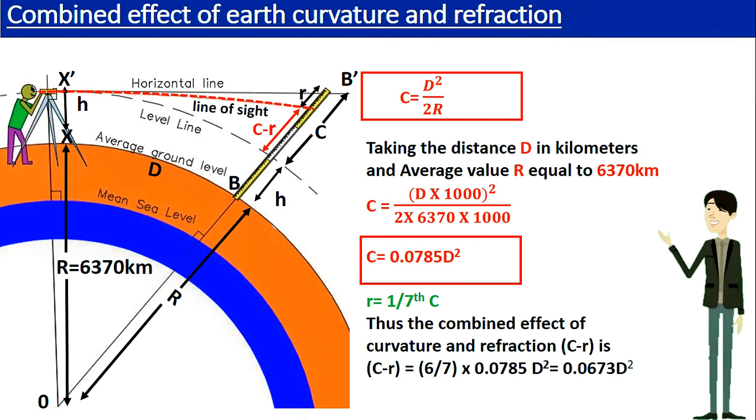After doing experiments it has been found that refraction error simple R is 1 7th of the earth curvature error. Thus we can write the combined effect of earth curvature and refraction C minus R as 6 7th times of the earth curvature error. Hence we can simplify the equation as follows. C minus R is equal to 0.0673 D squared.